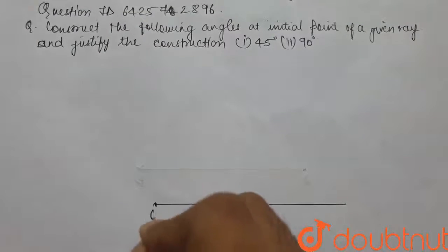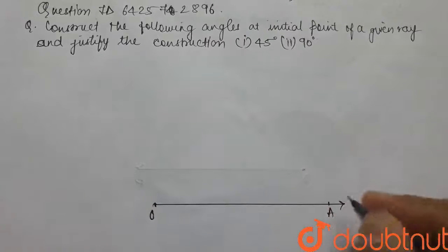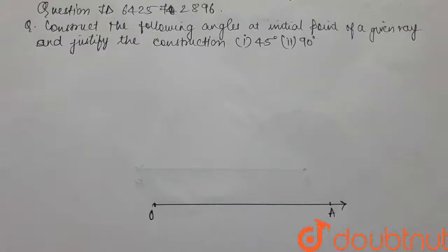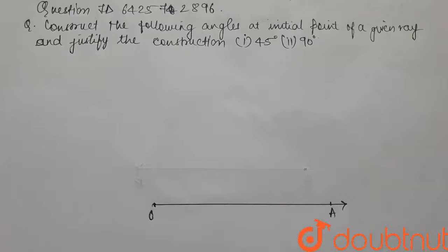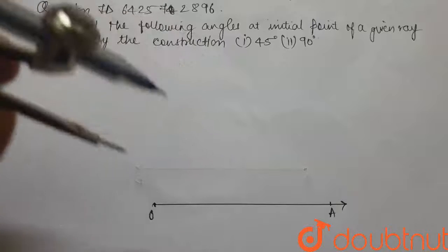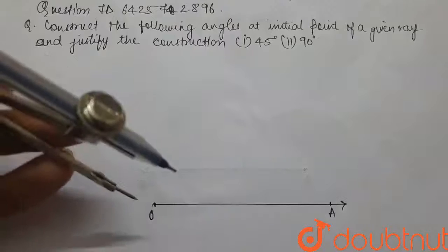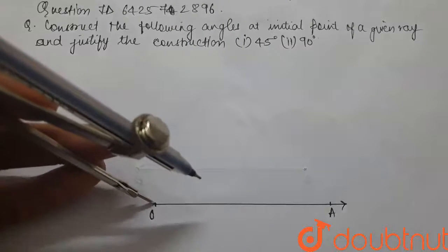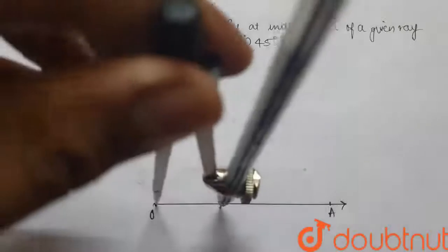Let's call this ray OA. Then we will first make our 90 degree angle and then we will bisect that to get our 45 degree angle. So to make our 90 degree angle we will use a compass and take a random distance on the compass. Then we will place our compass on O and make a semicircular arc.